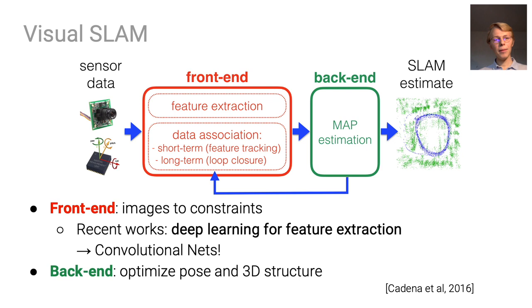SLAM typically decomposes the problem into the front-end and the back-end. The former extracts features from streams of data, such as images, for which convolutional neural networks are very effective. It then computes constraints by data association, matching the features, while the back-end estimates the poses and the 3D structure from these observations.